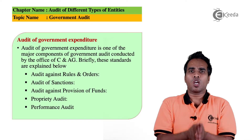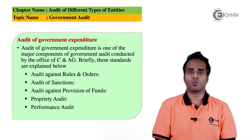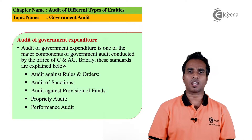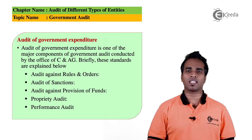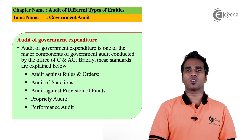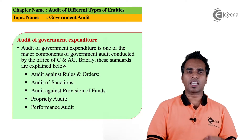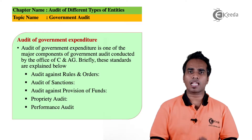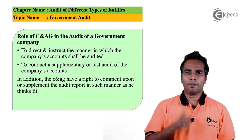After those checks, we have Performance Audit — checking whether government programs are successful and performing well. To summarise the Audit of Government Expenditure: first, Audit against Rules and Order; second, Audit of Sanctions; third, Audit against Provision of Funds; fourth, Proprietary Audit; fifth, Performance Audit.